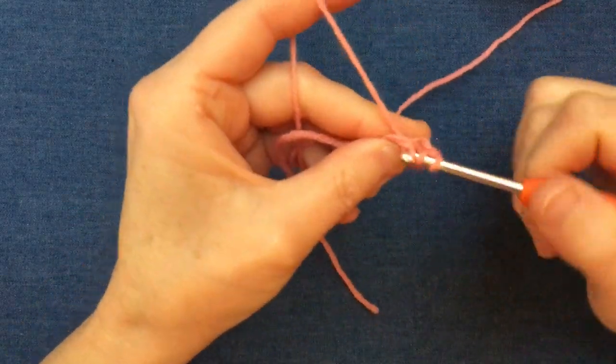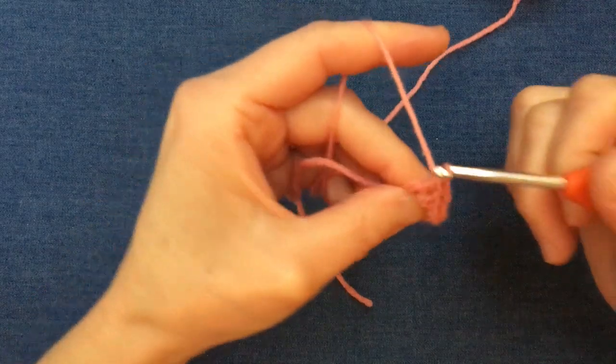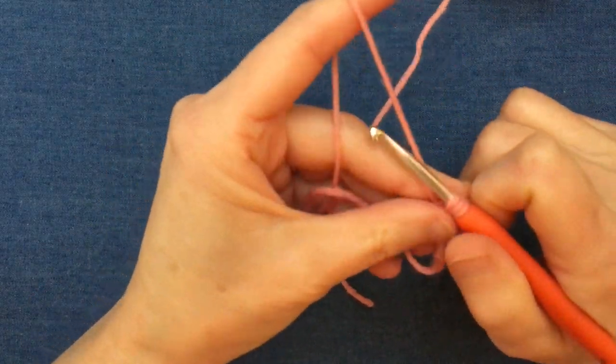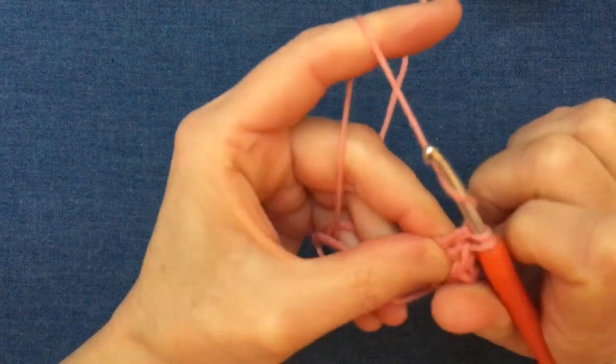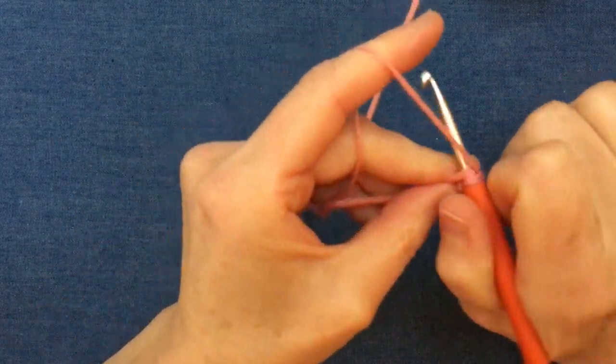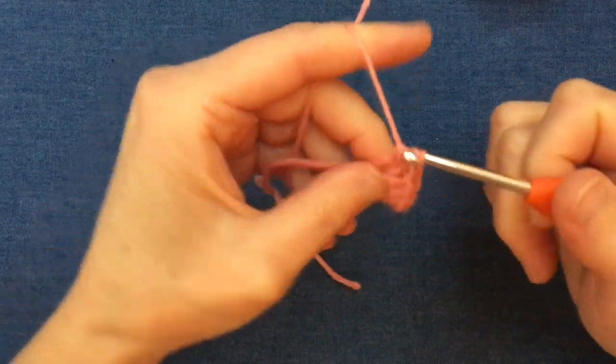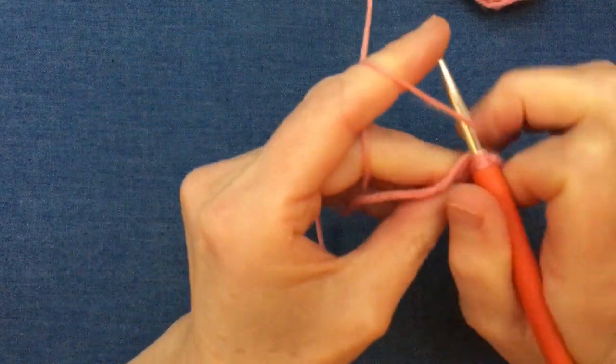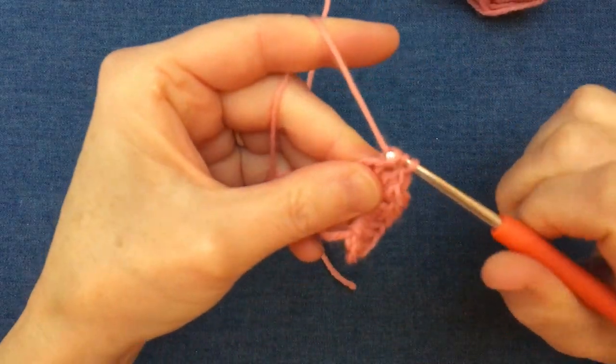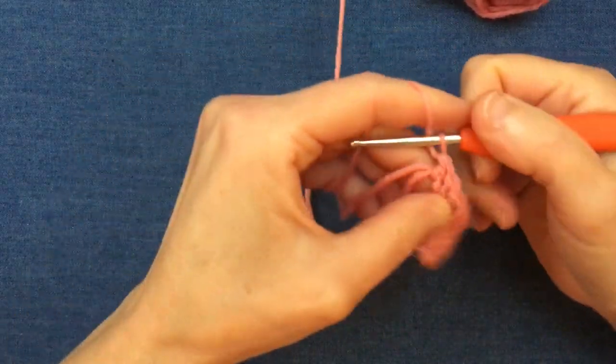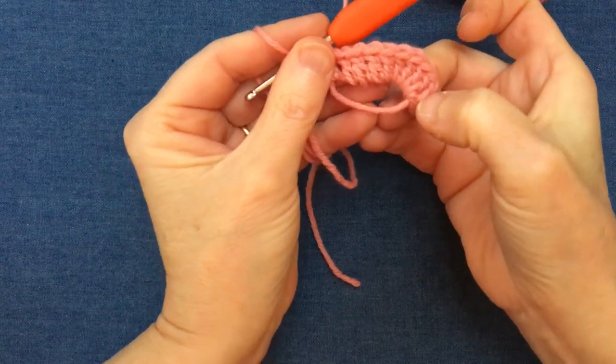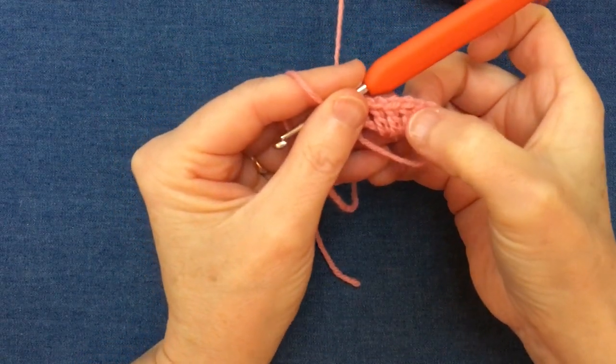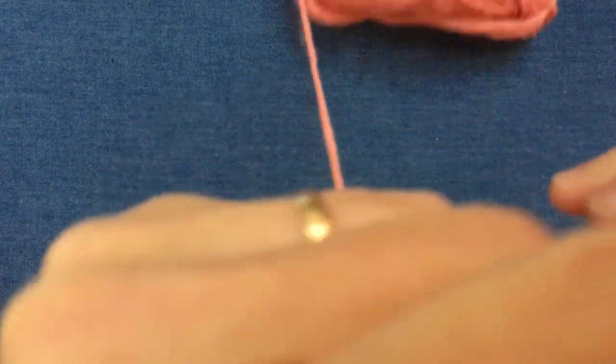So that I have my full 12 for the beginning of this project, each time making sure I cover both my threads. Let's just check how many we've got. So I'm counting the three chain as my first treble stitch: one, two, three, four, five, six, seven, eight, nine, ten. So two more. That's eleven, and finally one more. Twelve.